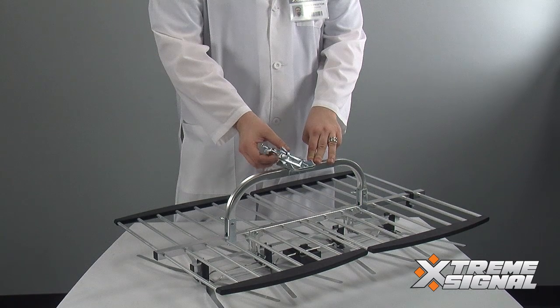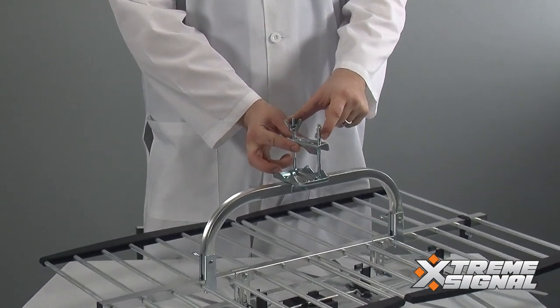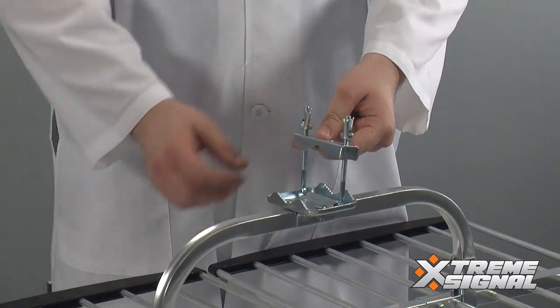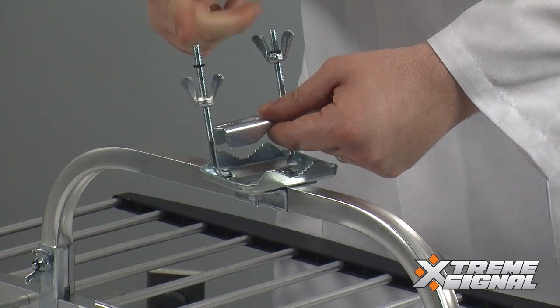When it comes time to mount this to your mast, you use this crossbar and two wing nuts on the clamp here to secure it to your mast firmly. Just tighten these down. And you'll be all set to go.